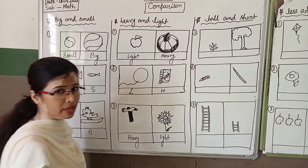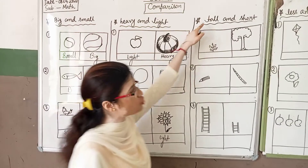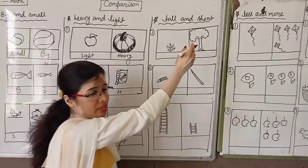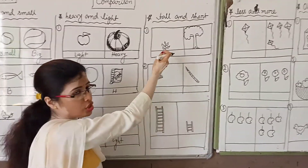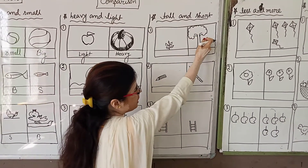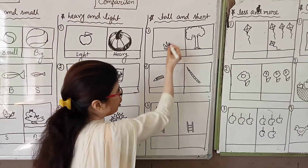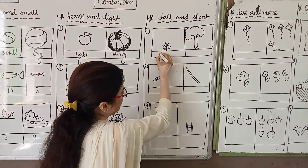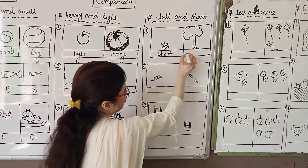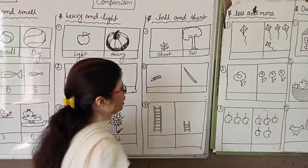So these are the comparisons about two things. Next one is tall and short. Very easy examples are there. Which one is tall and which one is short? This tree is tall and this plant is small or short. So you can write here short and you can write here tall or T — T for tall.